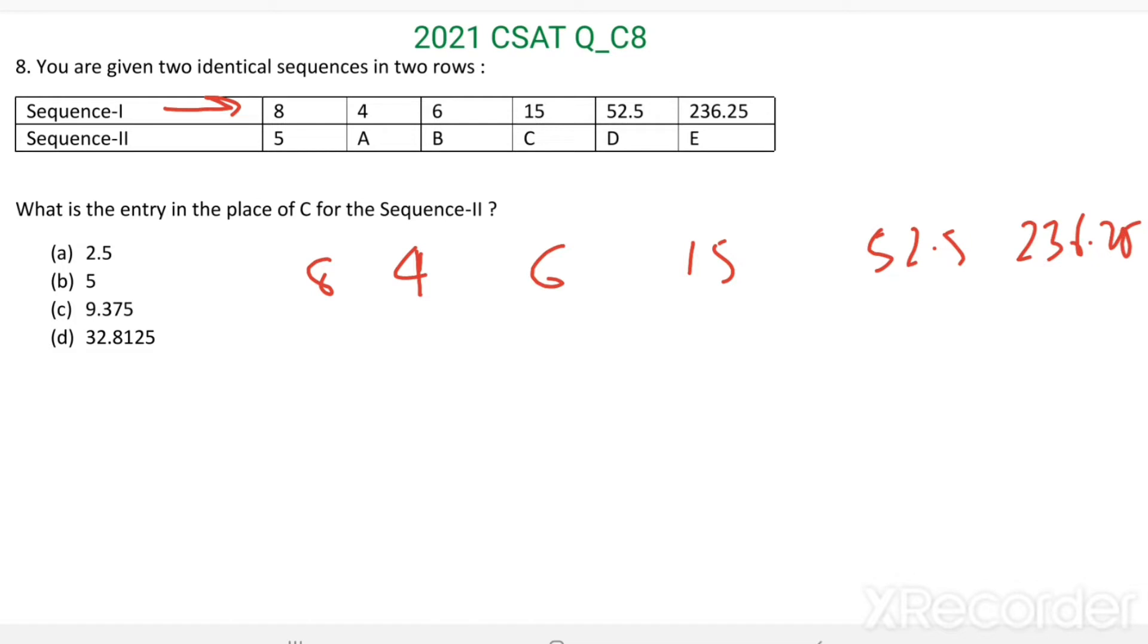But for Sequence 2, only the first entry is given, this 5. Now we have to find the value of C.